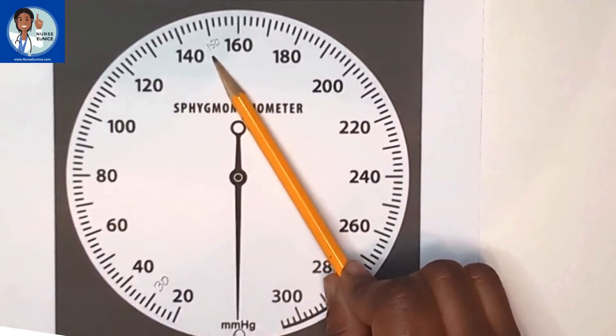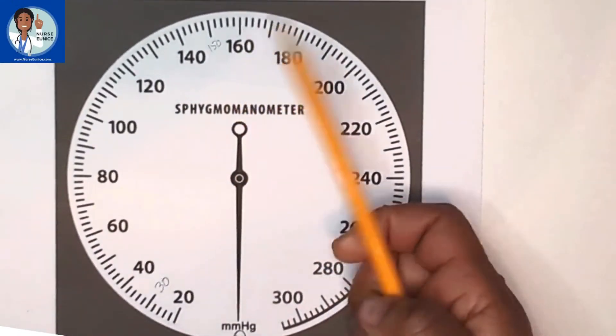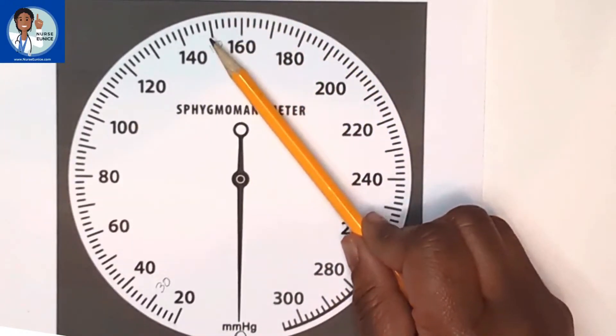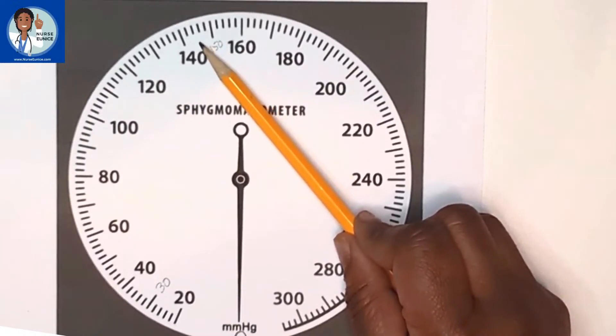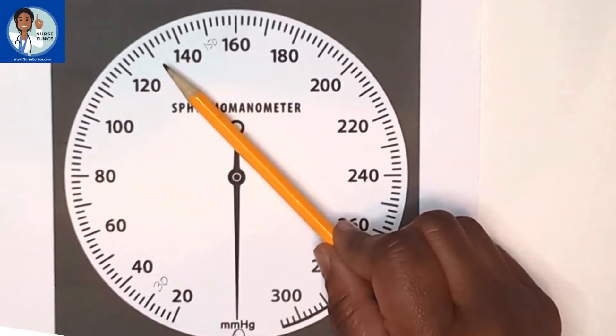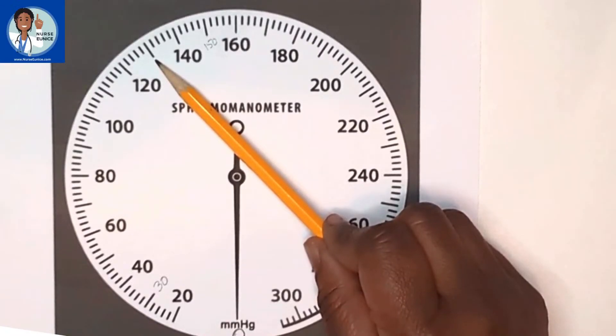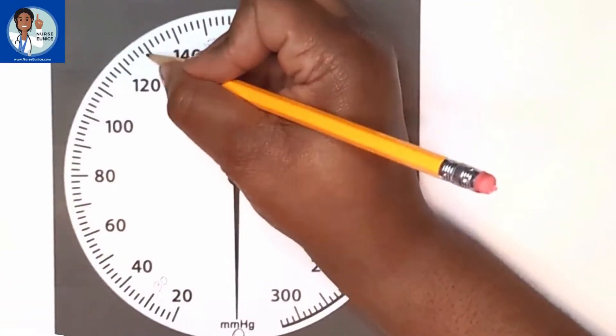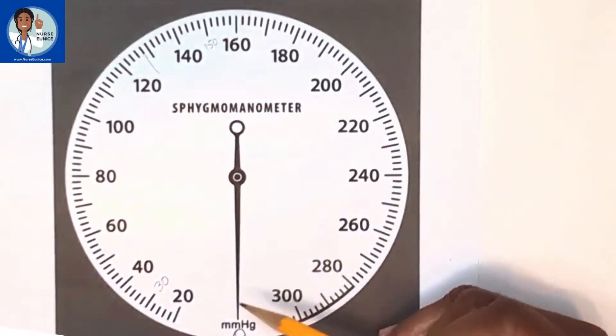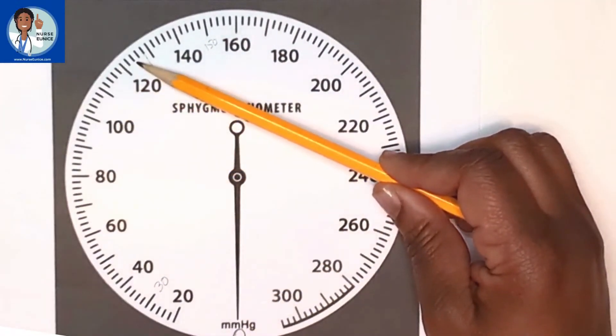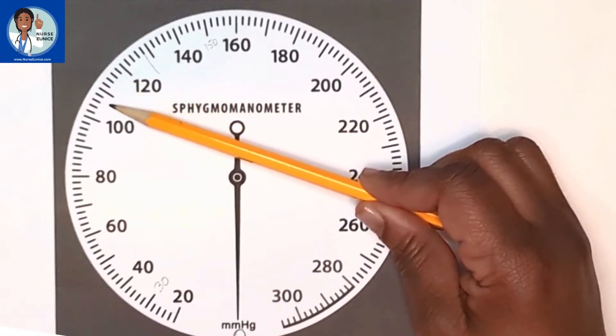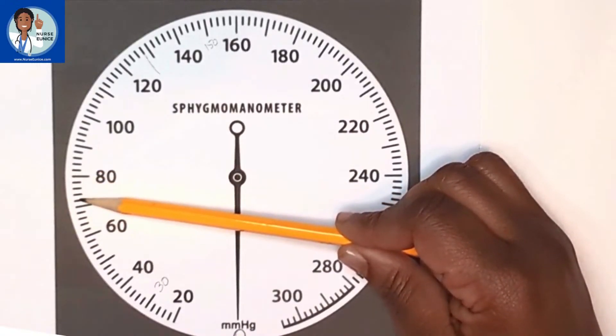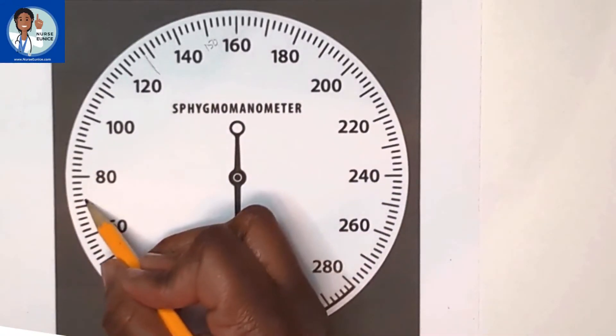We're going to pump the cuff up to 150, and then we're going to gradually release the air valve. We're going to turn it counterclockwise, turn it back towards us. The needle should drop about two millimeters of mercury per second. Where you hear the first thump is going to be called the systolic pressure. You're going to continue to release the air slowly. Wherever you hear the last thump, and it gets really light, that would be our diastolic pressure.